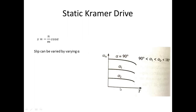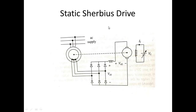As alpha increases from 90° to 180°, cos(α) decreases, and rotor speed omega_m decreases accordingly. So the speed is controlled by varying the firing angle alpha.